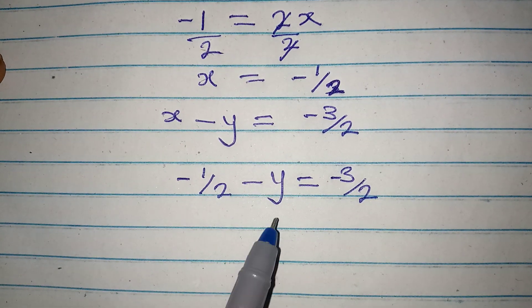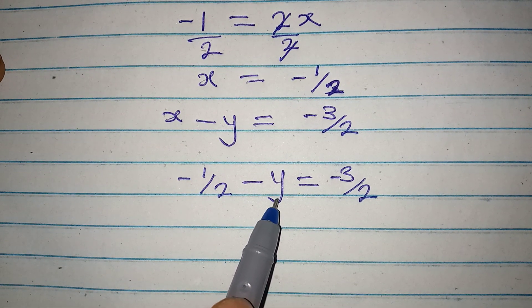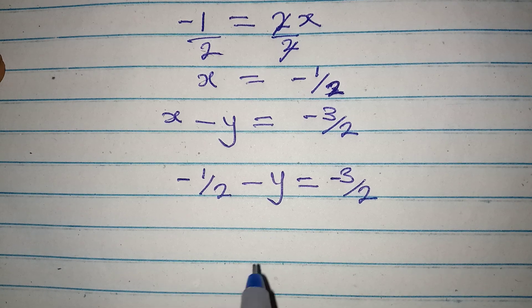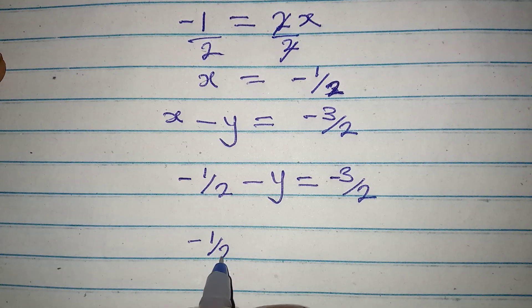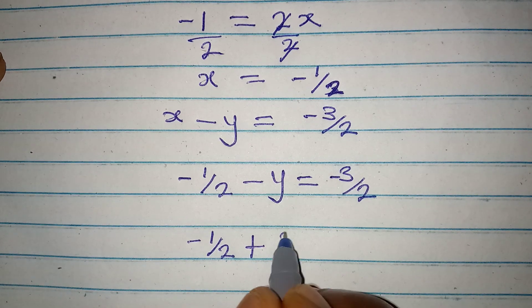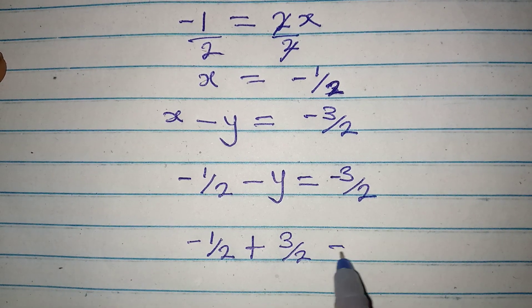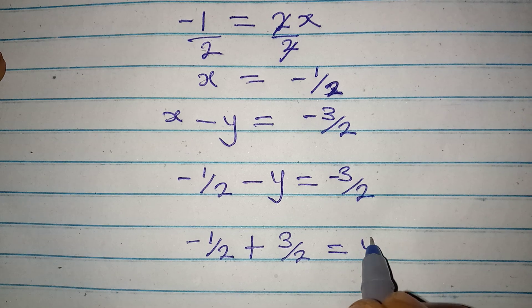Now what do I do? Make y the subject because we are looking for y. Now we have minus 1 over 2 plus, this becomes plus 3 over 2 equal to positive y.